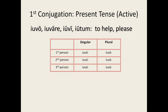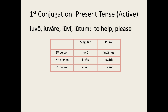So the next step is to try pausing this video to conjugate the verb 'iuvo' for yourself in the present tense. How did you do? Did you manage to get all the endings right? We have: iuvo — I help; iuvas — you (singular) help; iuvat — he, she, it helps; iuvamus — we help; iuvatis — you (plural) help; iuvant — they help.